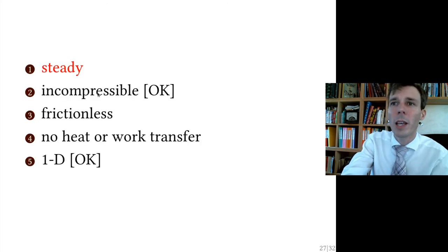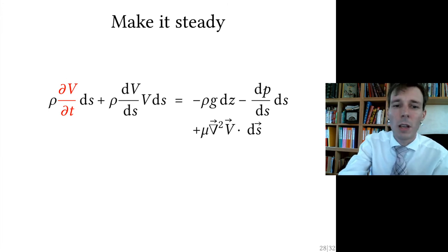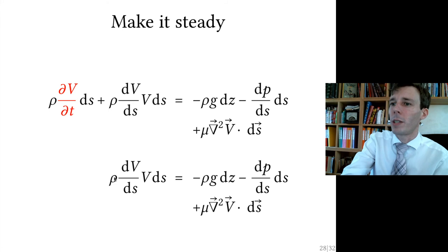Once we've done this, we turn to the first condition which is steady flow. Inside this equation that we had, we can just remove the unsteady part, the change in time of the velocity field. So we're just left with this now, a four-term equation.